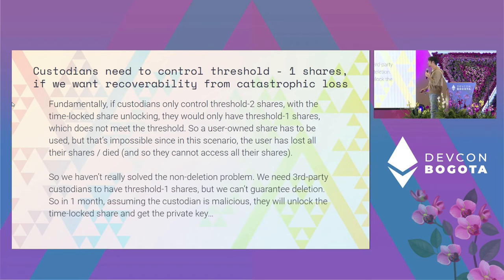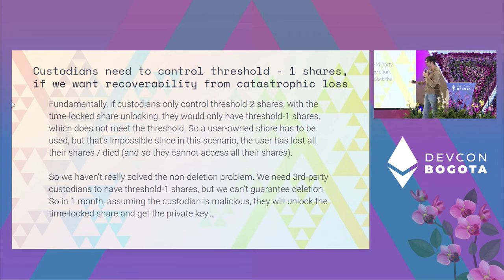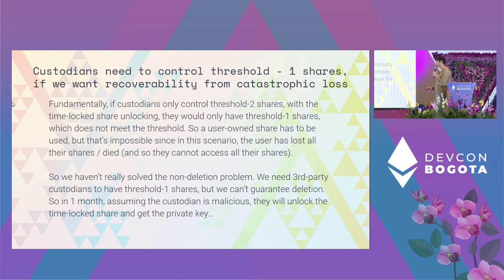So removing custodians doesn't solve the non-deletion problem — it's a non-solution. We still need third parties to hold threshold-minus-one shares, but we can't guarantee deletion. So after one month the custodian might be malicious and steal the key.